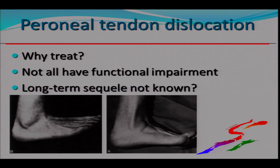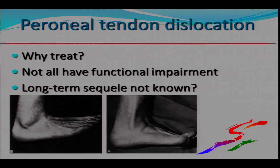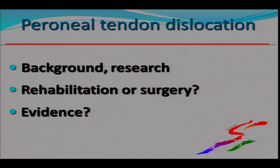Why should we treat this? Not everybody has a functional impairment, and the long-term sequelae are not very well known. People can provoke the dislocation of the tendon, and sometimes this is asymptomatic. I have a colleague who has had this for more than 20 years, doesn't have much pain, can play football, and is almost 50 years old — he absolutely doesn't want surgery. So there is no major evidence for either rehab or surgery in the acute case. For chronic dislocation, the evidence is surgery if it's symptomatic.